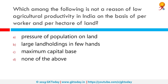Which among the following is not a reason for low agricultural productivity in India on the basis of per worker and per hectare of land? The correct answer is maximum capital base. Due to improper irrigation, farmers can sometimes produce only one crop per year. Indian soil also has many problems like erosion, water logging, nitrogen deficiency and swamps. However, the capital base is not part of the problem.